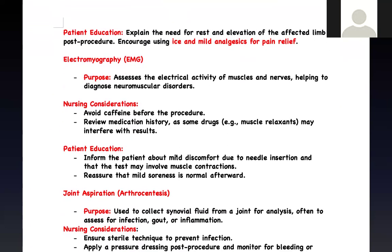EMG — electromyography. We are assessing the electrical activity of the muscles and the nerves as the muscle is stimulated by the nerve. This can determine neuromuscular disorders like myasthenia gravis, amyotrophic lateral sclerosis, and Guillain-Barré syndrome. Key nursing consideration: avoid caffeine before the procedure, as it may affect results. Also review the patient's history because sometimes muscle relaxants are given, which can also affect the results.